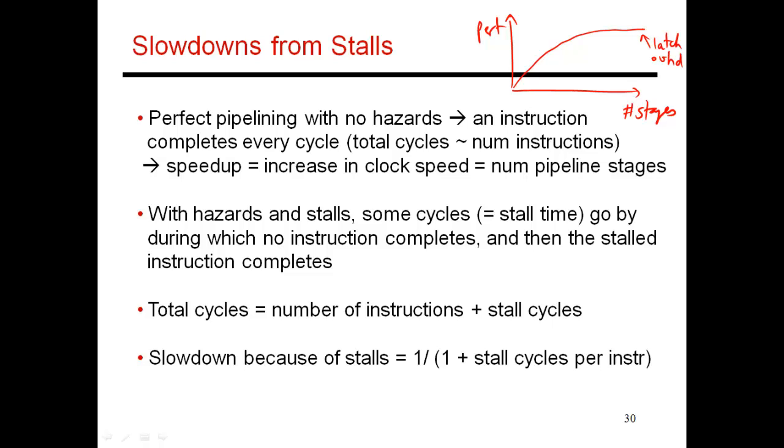Now that we've talked about dependencies, I think we are in a position to refine this model a little bit more. So earlier, we had assumed a perfect pipeline with no hazard, which meant that an instruction finished every single cycle. So if you run your system for a million cycles, roughly a million instructions completed.